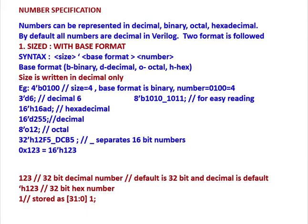In Verilog, numbers can be represented either in decimal, binary, octal, or hexadecimal. By default all the numbers are decimal in Verilog. This is the format for how we represent a number in Verilog design. The syntax is first the size, then inverted comma, then base format, and the number.